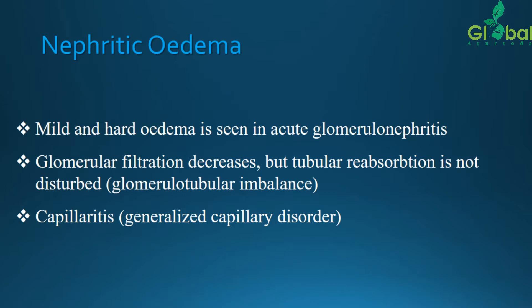Nephritic edema — mild and hard edema is seen in acute glomerular nephritis, which is inflammation of the glomerulus along with the nephron cells. Glomerular filtration decreases but tubular reabsorption is not disturbed — this is the glomerular-tubular imbalance. Glomerular filtration is in a state of decreasing while tubular reabsorption is not hampered. Capillaritis — a generalized capillary disorder — is also associated with capillaries related to fluid retention and urine reabsorption and secretion mechanisms.